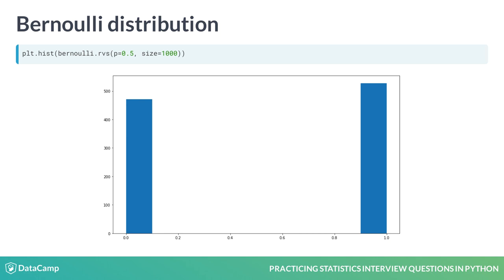Both heads and tails have the same probability of 0.5, so the values are even in this sample. Since there are only two possible outcomes of Bernoulli, the probability of one is always one minus the probability of the other.